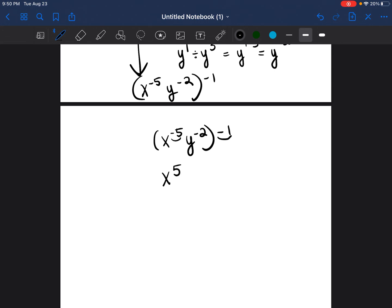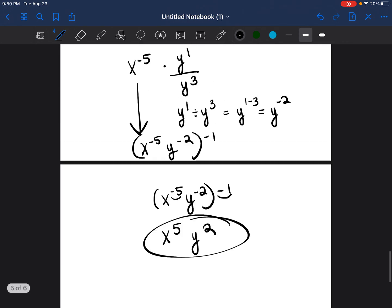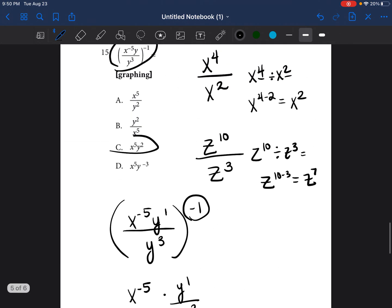And then you do the same thing. y to the negative two times negative one, which would be negative two times negative one, which is y to the two power. So it would be x to the fifth y squared, and your answer would be C.